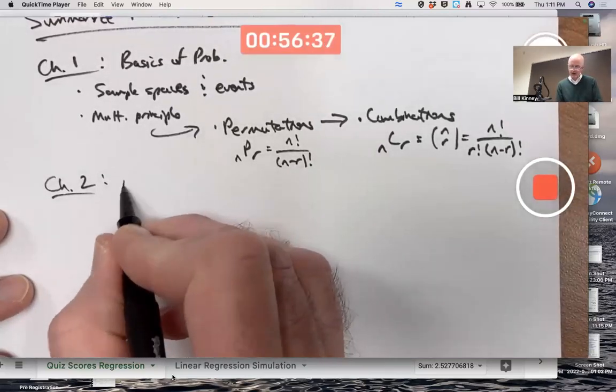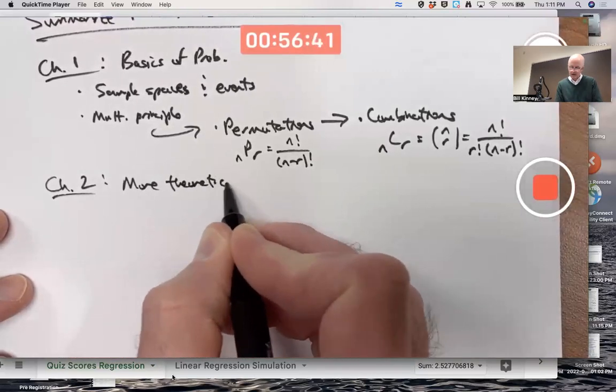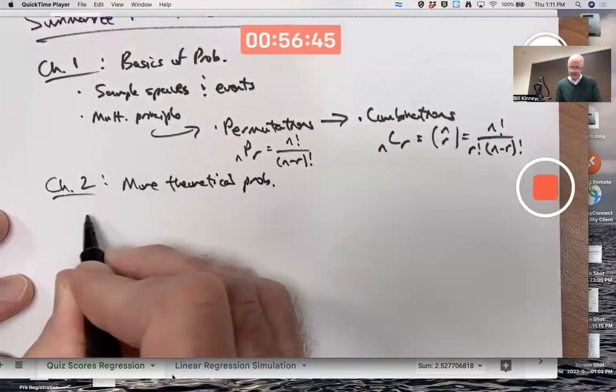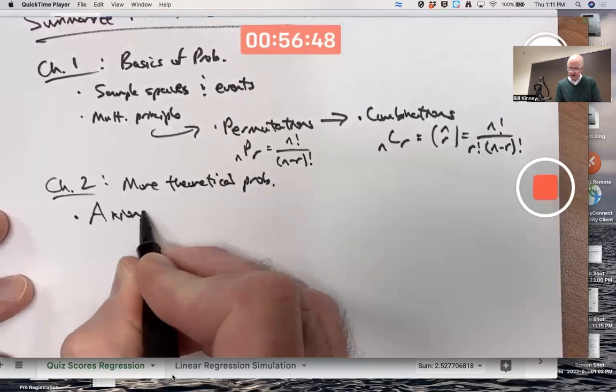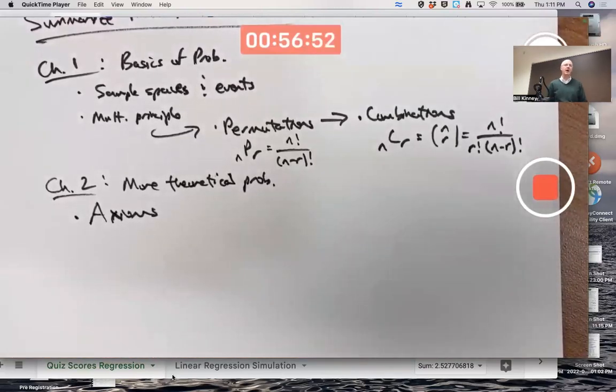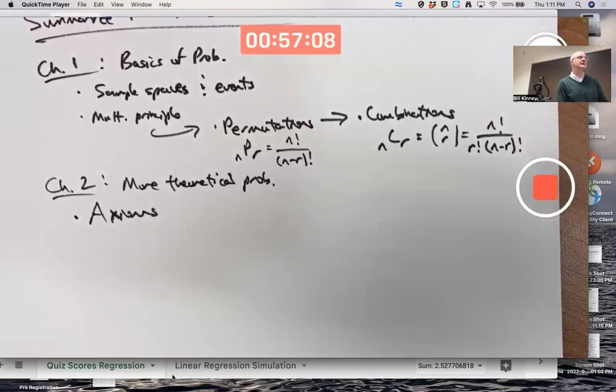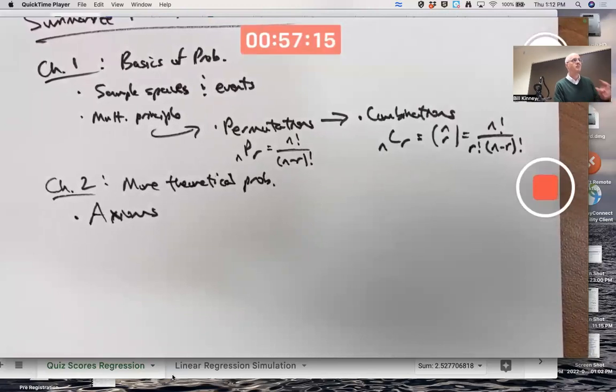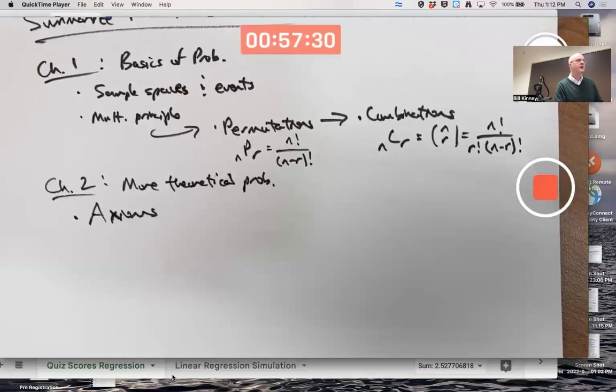Chapter two, more theoretical probability. We've got the axioms. One axiom being that probabilities are never negative. They're always greater than or equal to zero. Another axiom being the probability of the sample space occurring, P of S is one, meaning something's got to occur. And the third one is essentially the addition rule for mutually exclusive events. If A and B are mutually exclusive, the probability of A or B is the probability of A plus the probability of B. Venn diagrams are useful for conceptualizing that and solving problems as well.